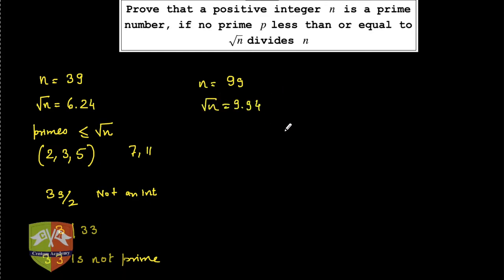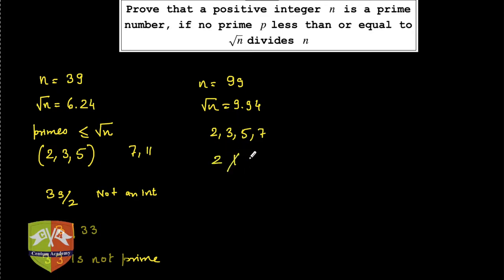So what prime numbers are there less than root n? Primes less than 9.94 are 2, 3, 5, and 7. We just need to check the divisibility of 99 by these. Clearly 2 doesn't divide 99, but 3 does divide 99. Hence 99 is not a prime.